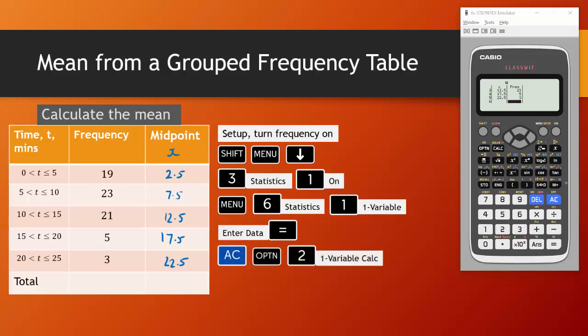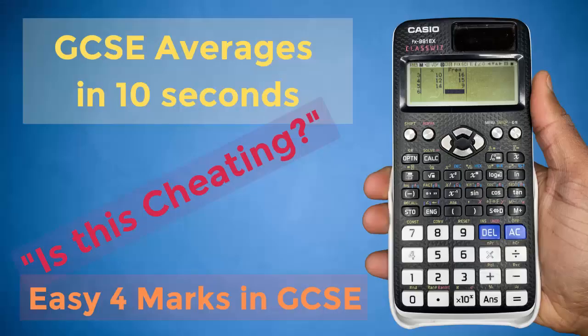Same as before you're going to press the AC button, press option, choose option 2 for one variable calculations and there's all your summary statistics there. Again we are just interested in the mean which is over here to two decimal places 8.98 and that's how you find the mean from a grouped frequency table so you can use this to check that the working you've done in your exam is correct. That's everything that you need to know about averages for GCSE maths using the Casio ClassWiz.